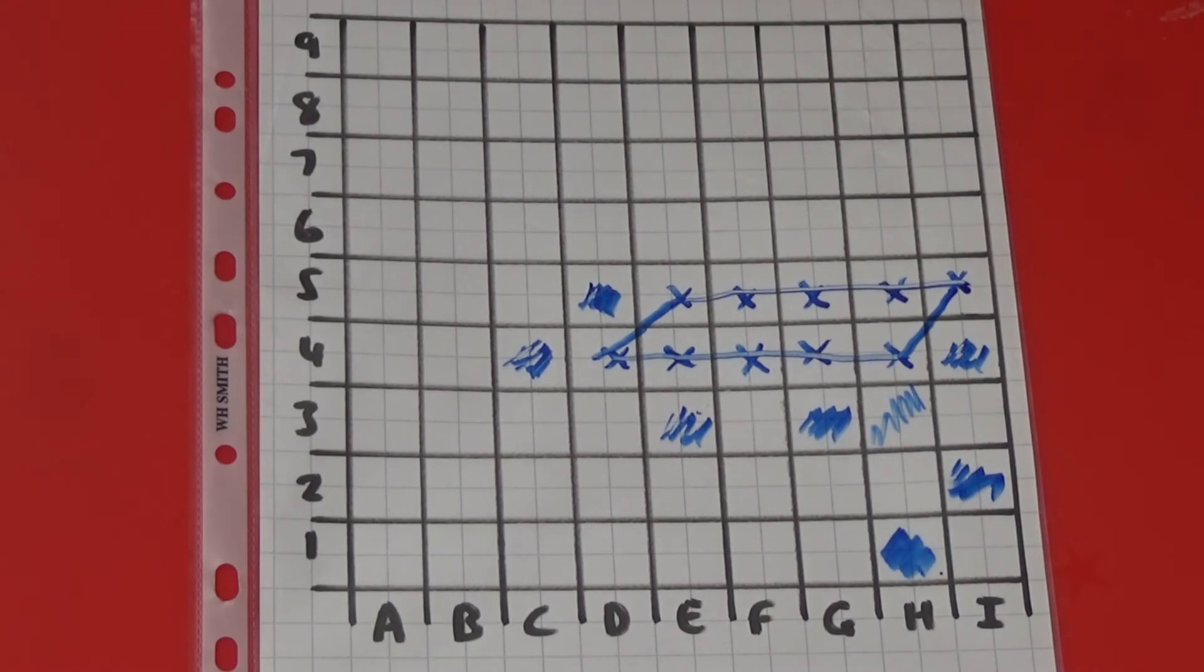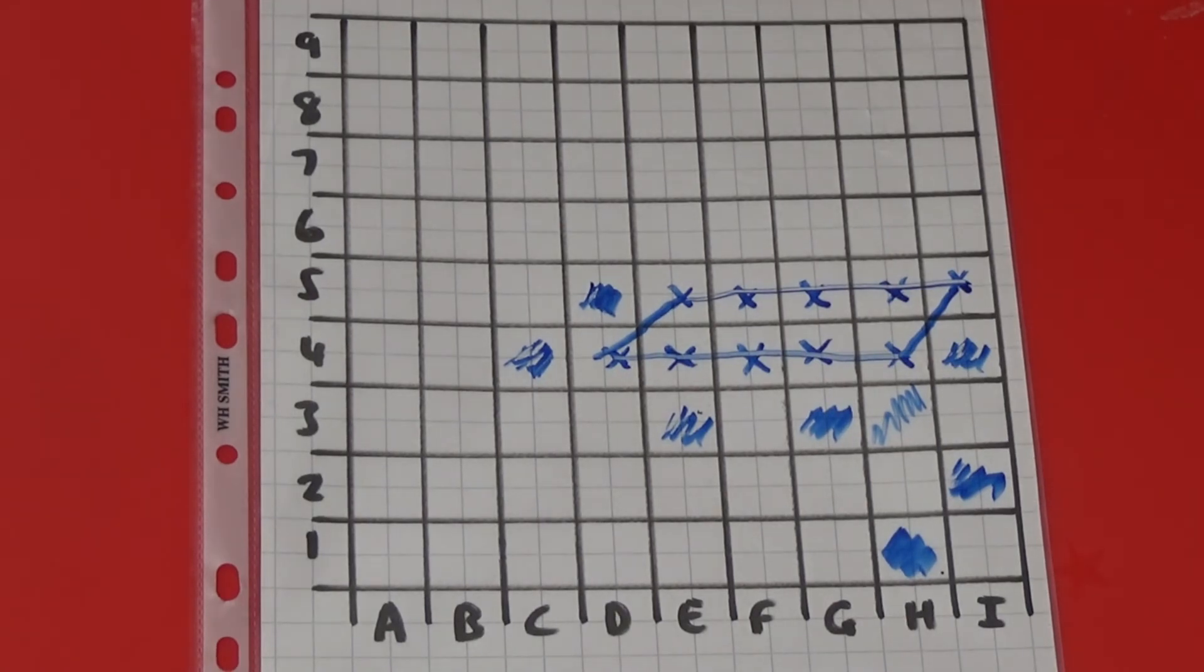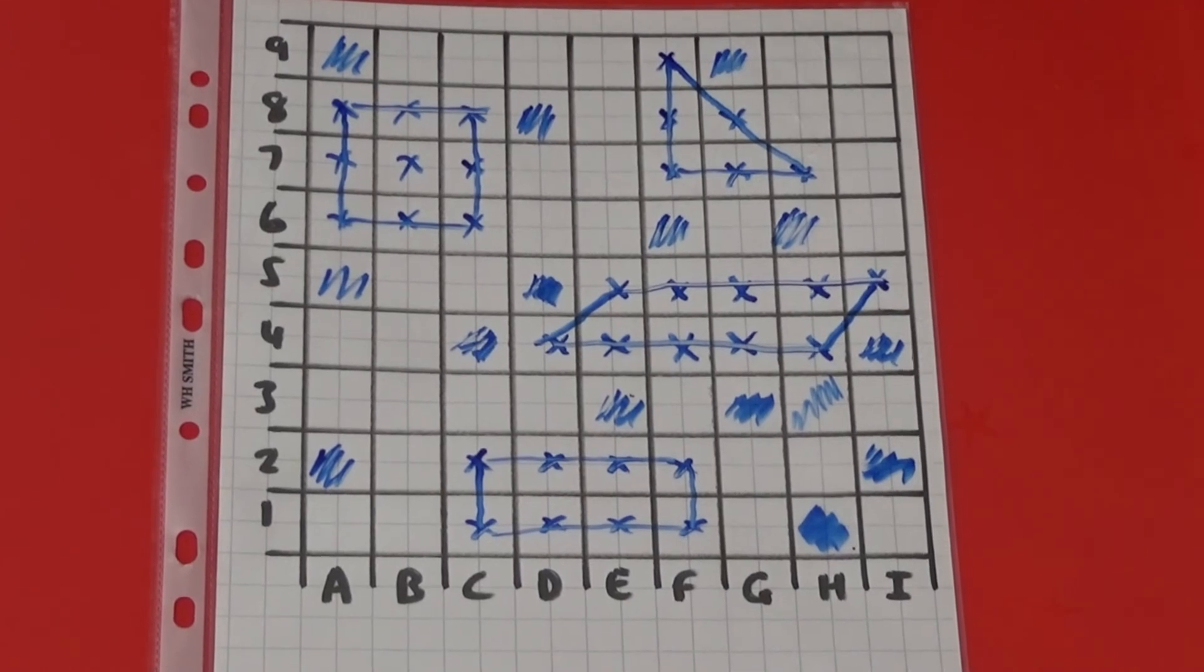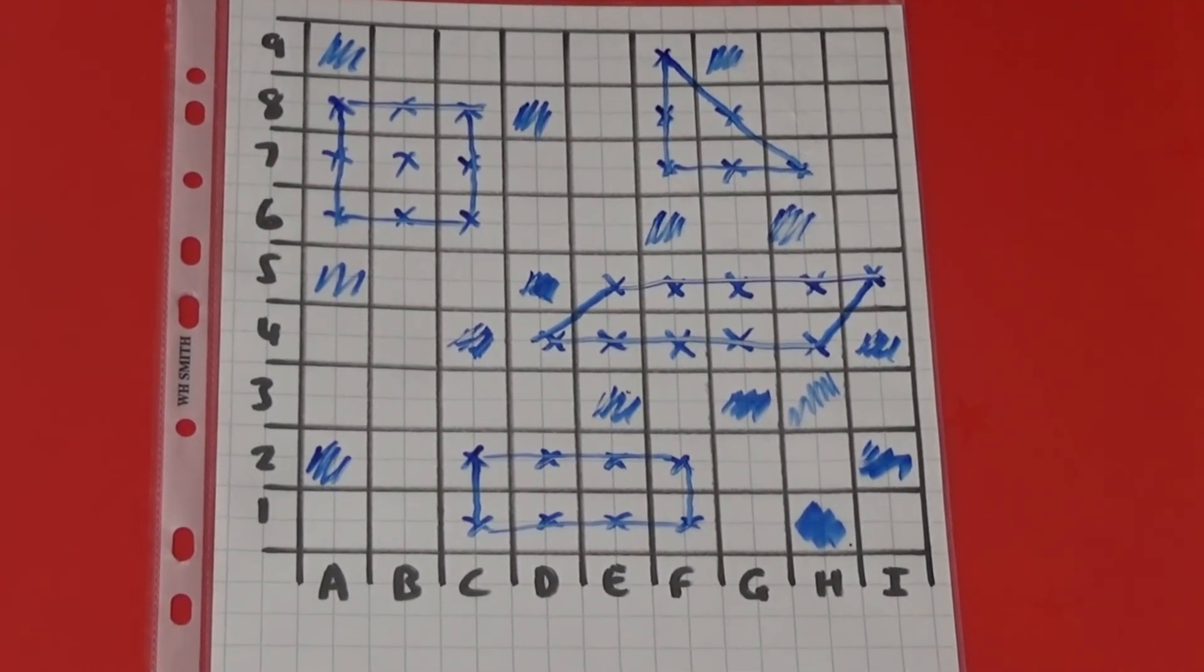Take it in turns to call out a grid reference until all the crosses for one shape have been found. The other player calls out when the whole shape has been found. I then need to join up the crosses and name the shape. So here I would say parallelogram. The winner is the first player to find and name all four shapes.